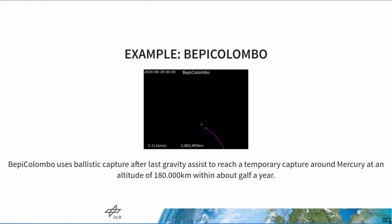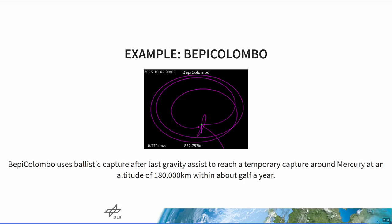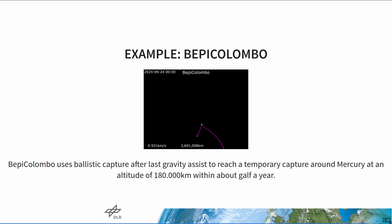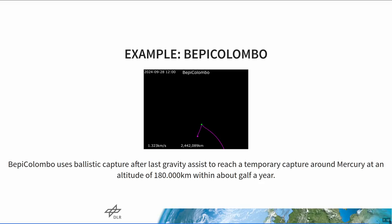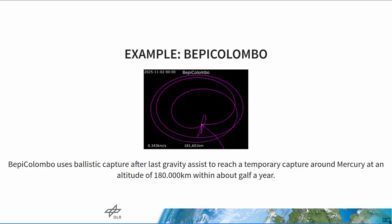Let's look at a real example — again, BepiColombo. The green dot is now Mercury. This is a zoom of the other animation. The purple line is the orbit and it looks strange. The first few movements around Mercury are actually the last gravity assists for slowing down. Then it actually starts on the capture orbit, approaching Mercury. This is the part that's difficult to find but achievable with this stability analysis. When the animation ends, the spacecraft reaches the point when it's temporarily captured — at an altitude of 180,000 kilometers above Mercury. That's pretty high up, but it's enough for the mission, after which they do some other maneuver to actually stay around Mercury.